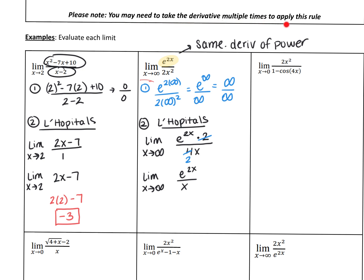You may need to take the derivative multiple times. Taking the derivative again: the derivative of x is just 1, and the derivative of e to the 2x is still e to the 2x times 2. So we have the limit as x approaches infinity of 2e to the 2x over 1. Plugging in infinity, e to the infinity times 2 is just infinity. It's no longer a fraction, and the answer is infinity.